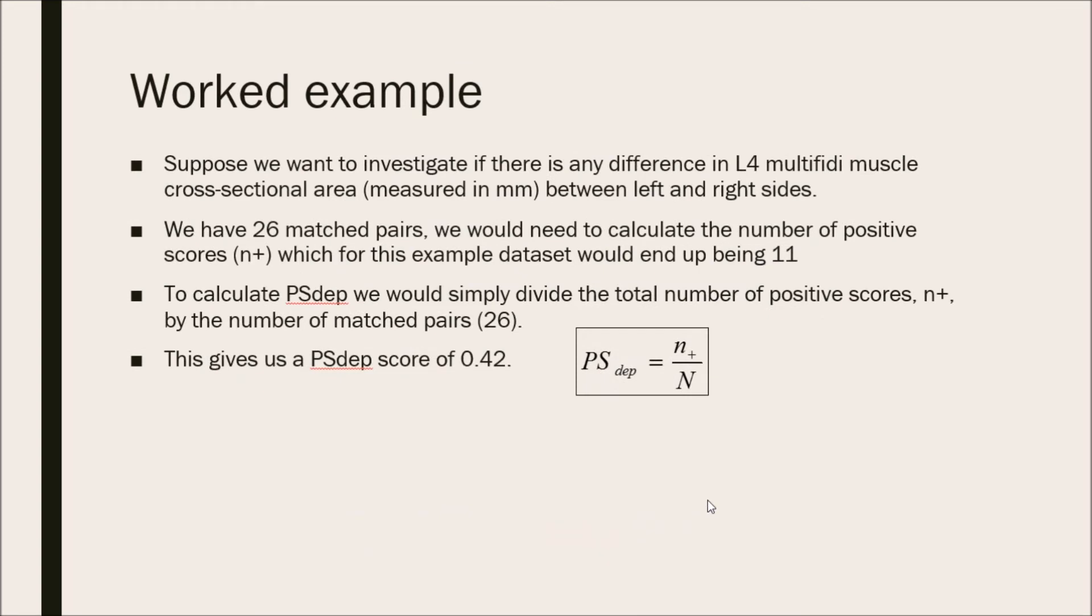Moving on to a worked example, suppose you want to investigate if there is any difference in the L4 multifidus muscle cross-sectional area measured in millimeters between the left and right arm sides. We have 26 matched pairs, and so we would need to calculate the number of positive scores, N-plus, which for this example data set would end up being 11.